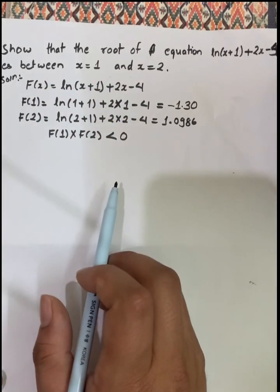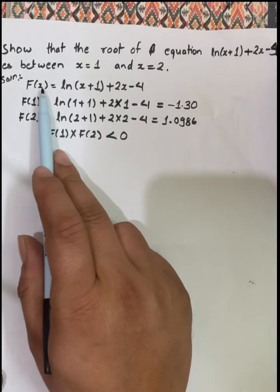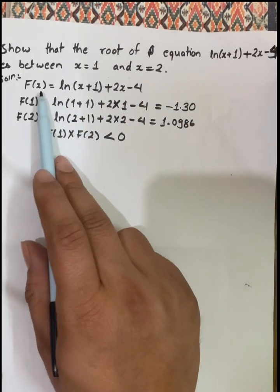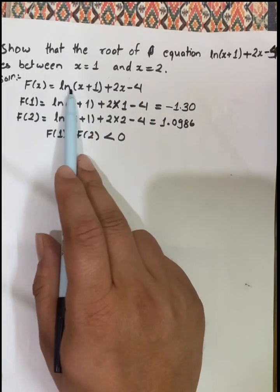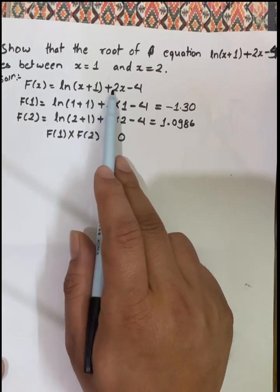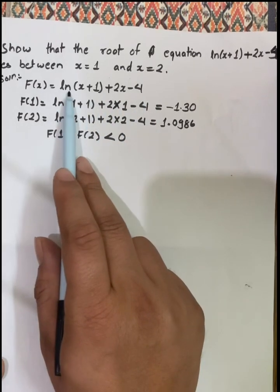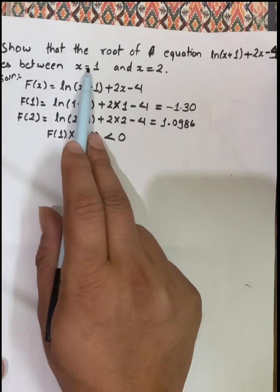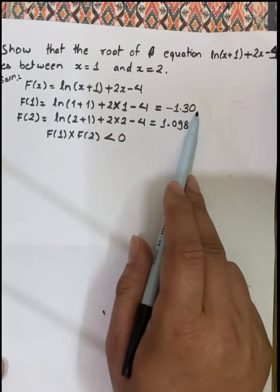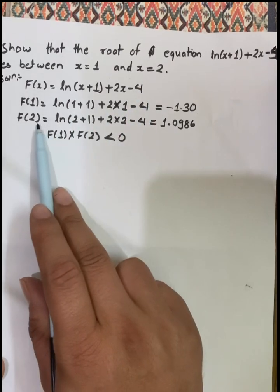Check whether the root lies between those points. The function is f(x) = ln(x + 1) + 2x - 4. Declare the function and evaluate at x = 1.